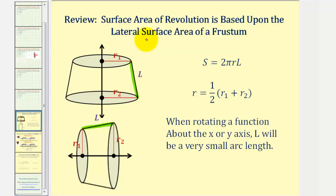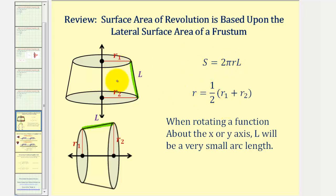It's really based upon the lateral surface area of a frustum pictured here. The lateral surface area would be the surface area of this shape, not counting the top and bottom. Therefore, the formula for the lateral surface area is equal to two pi r l, where r is the average of the two radii, and l is the length of the segment pictured here.